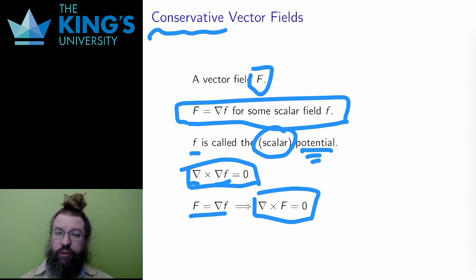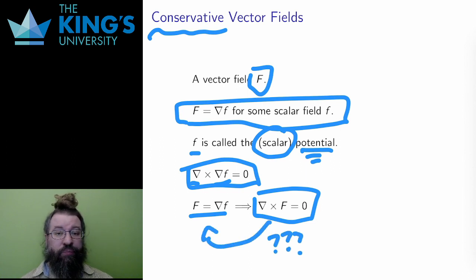This condition, zero curl, is necessary, but is it sufficient? Is it enough just to check the curl? The answer will be yes, but with some conditions, and to understand these conditions, I need to do a little bit more topology.